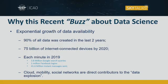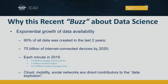Why this recent buzz about data science? One of the reasons is the exponential growth of data availability. 90% of all data was created in the last two years. 75 billion internet-connected devices by 2020 — and yes, there is no typo, it's billion and not million. Each minute in 2019: 3.8 million Google searches, 1 million Facebook logins, 41.6 million instant messages sent. We also have cloud, mobility, and social networks as direct contributors to the data explosion.